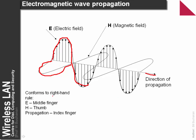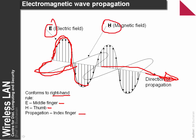We have what's called the right-hand rule, where we can use our fingers. The E will point to the electric field, the thumb to the H field, and the index finger will show the propagation. So the E field is up and down, the H field is across, and the direction would be out of the page. It is this electric field, magnetic field, and direction that defines electromagnetic wave propagation.